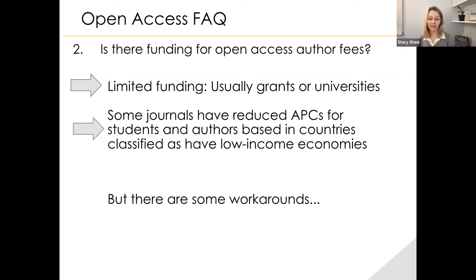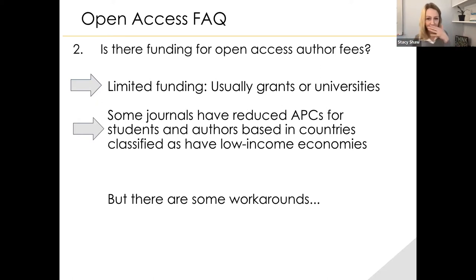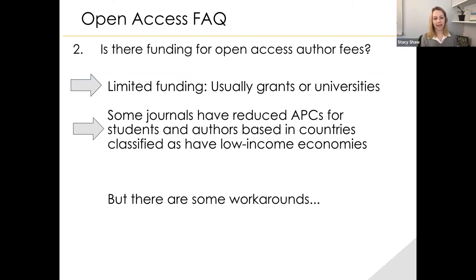There are some new interesting models, like Collabra Psychology, charging at cost but waiving APCs for graduate researchers or early career, and paying reviewers. But by and large, most of the time when talking about open access, someone's going to try to charge you an APC. Let's say you can't afford the APC but this is the best journal for your work — how can you still make your work more open access?